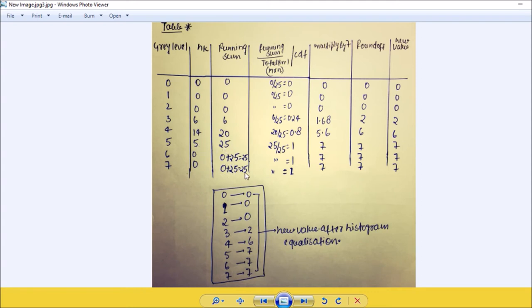Now running sum upon total pixels, this is also called as CDF, cumulative distribution function. So 0 divided by 25 is 0. 6 divided by 25 is 0.24, and 20 divided by 25 is 0.8. 25 divided by 25 is 1. Now multiply this CDF with 7. So 0, 0, 0, 1.68, here 5.6, 7, 7, 7.